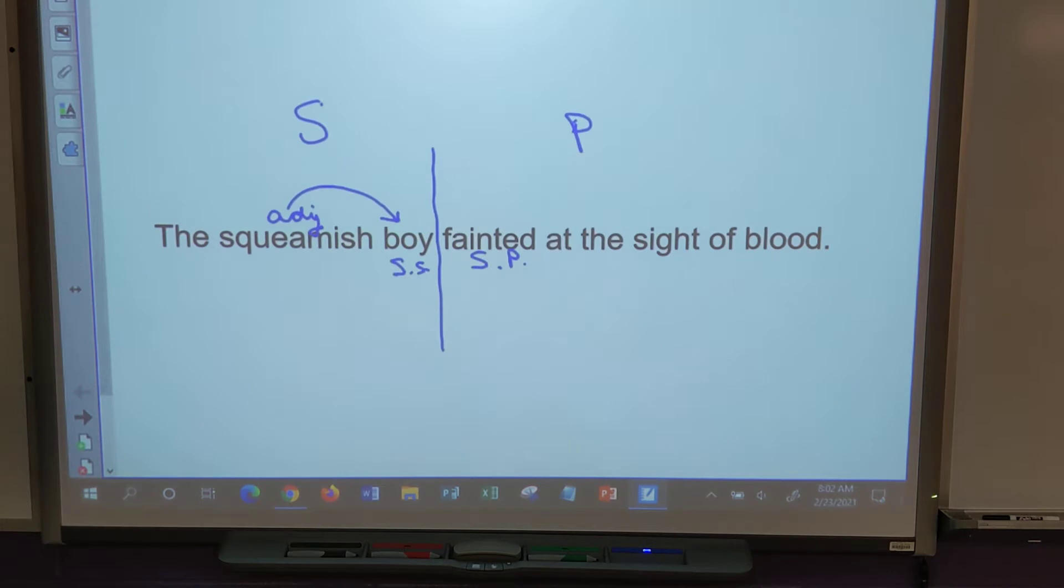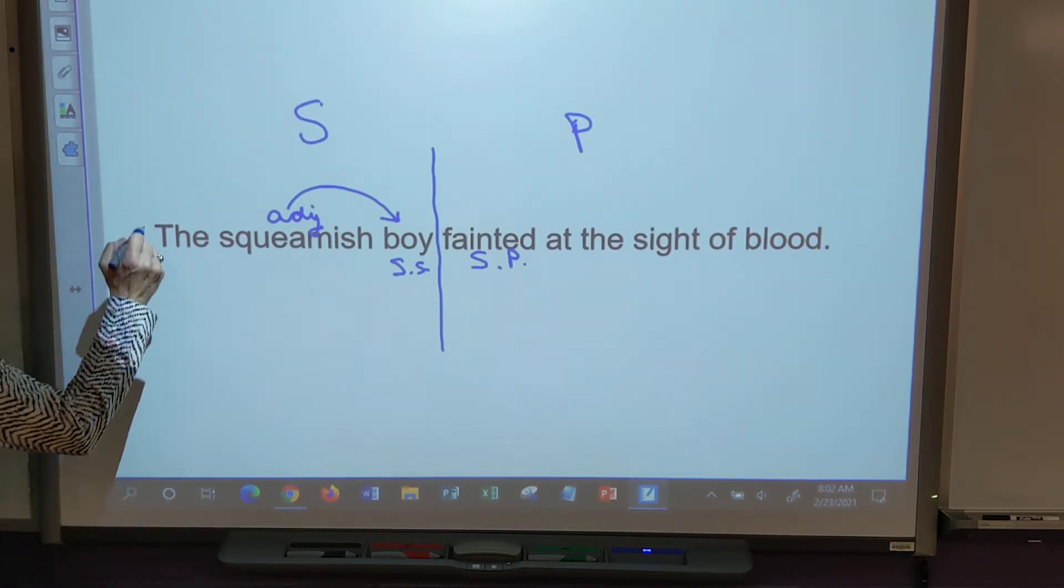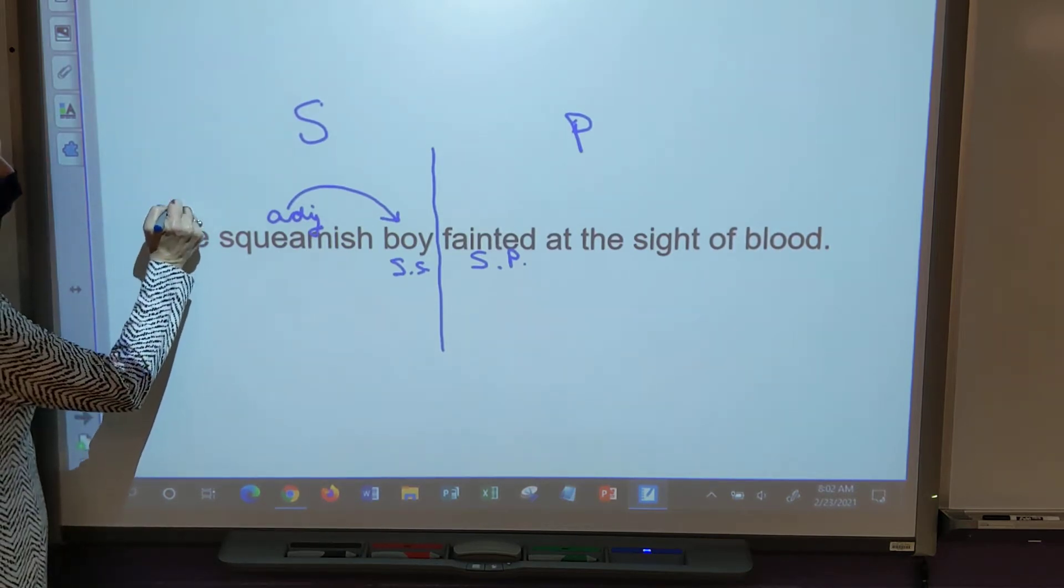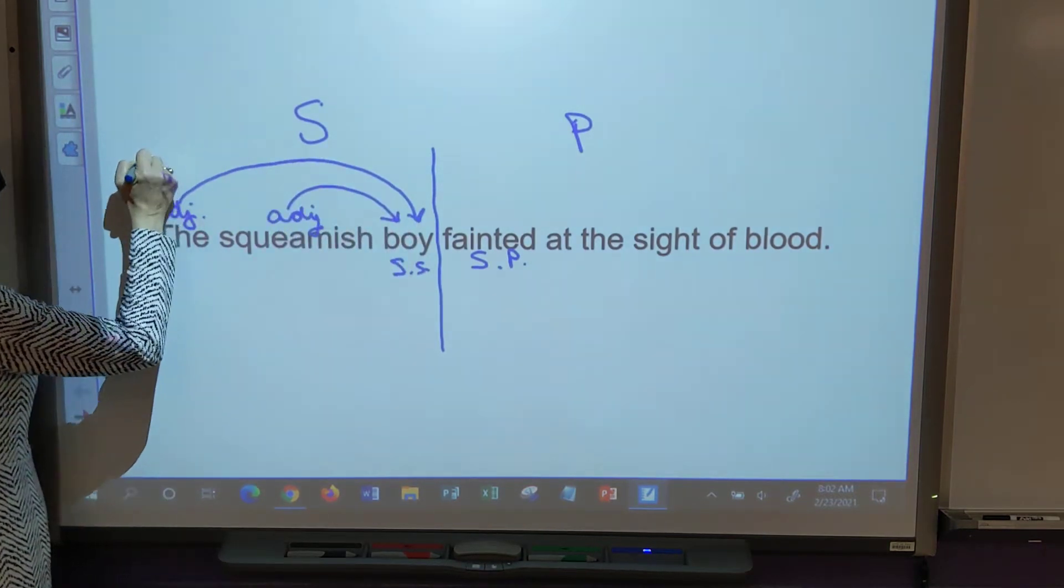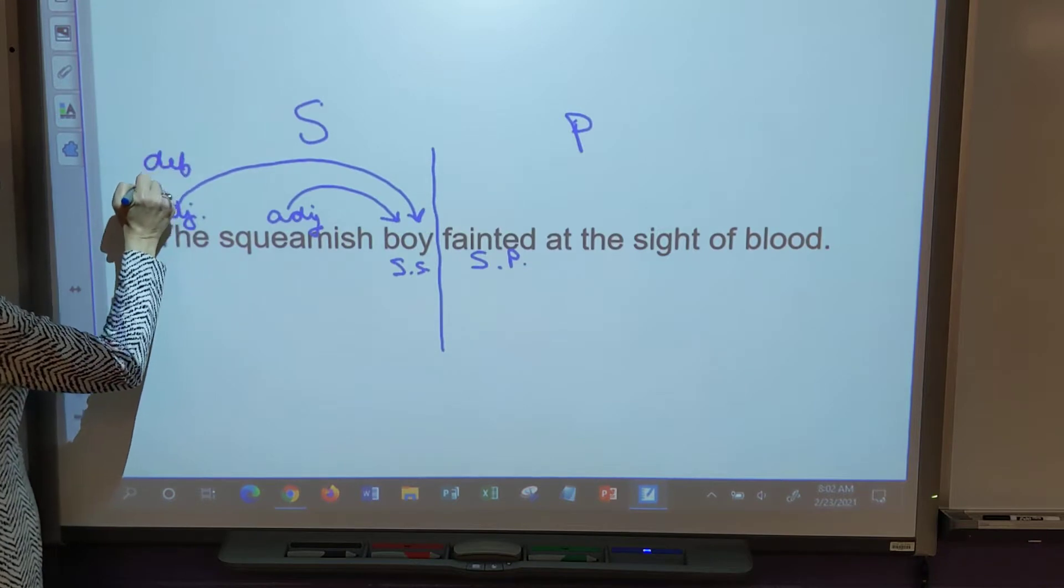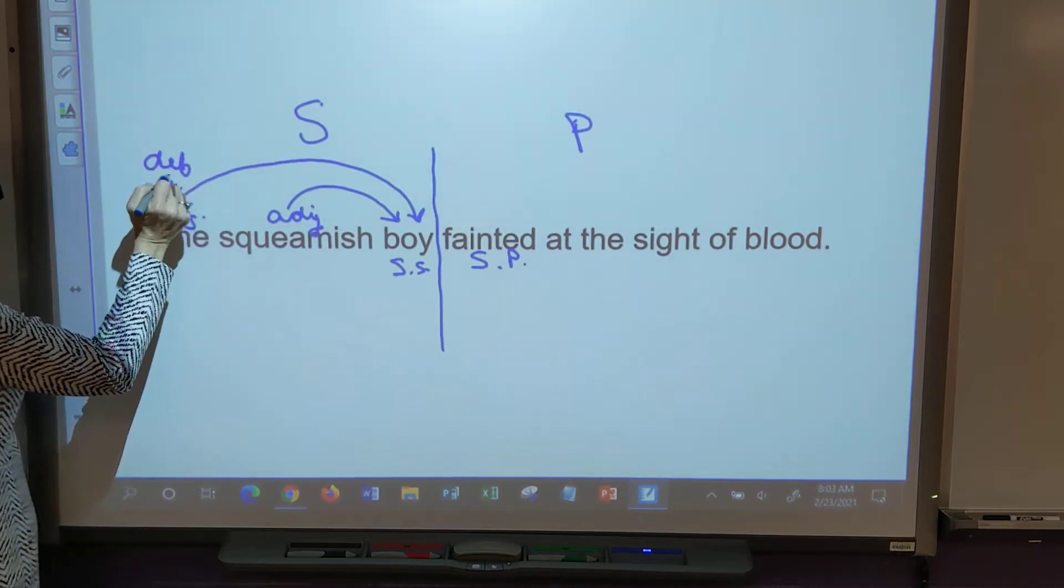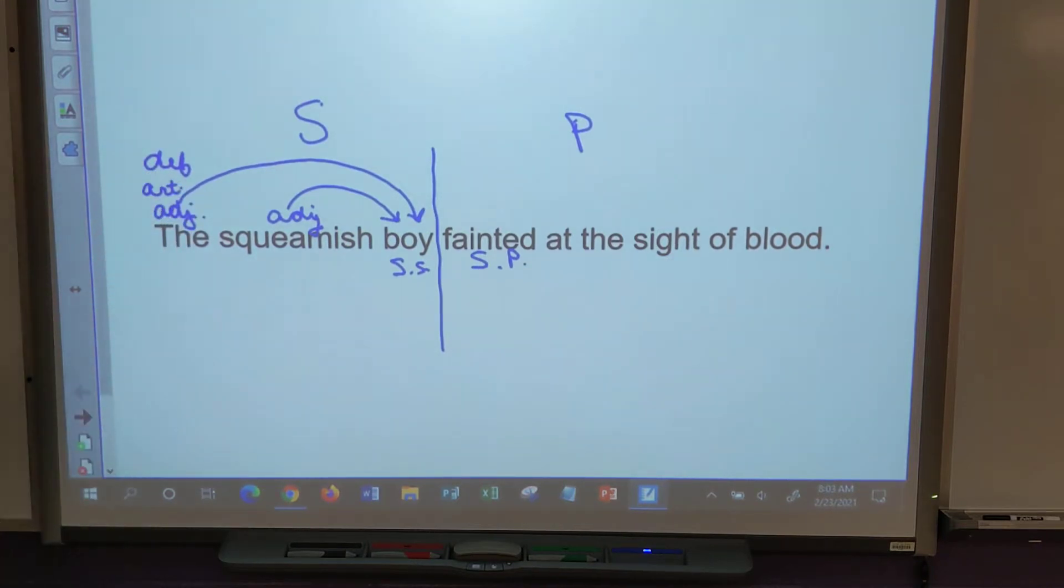Mia? The is an adjective describing the boy and it's a definite article. It is an adjective describing the boy and it is also a definite article. We're not talking about just any boy, right? We're talking about the boy.